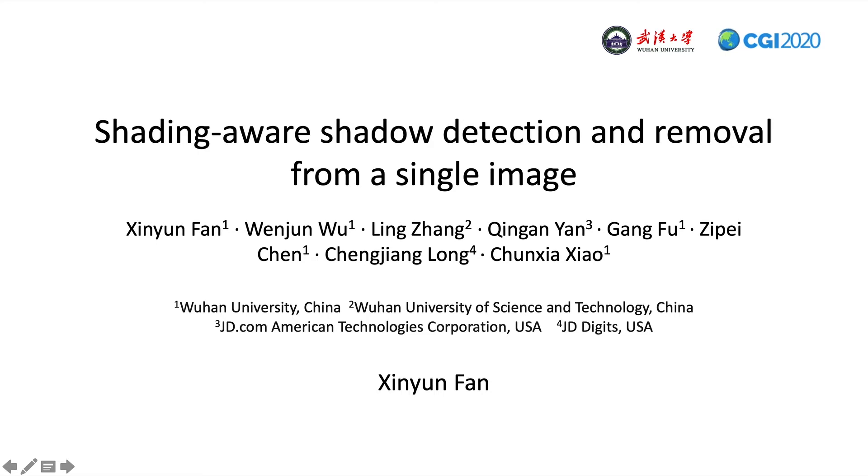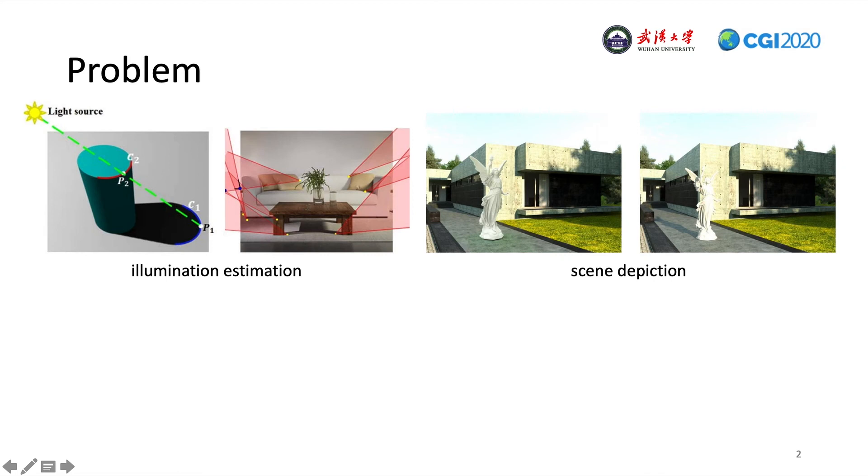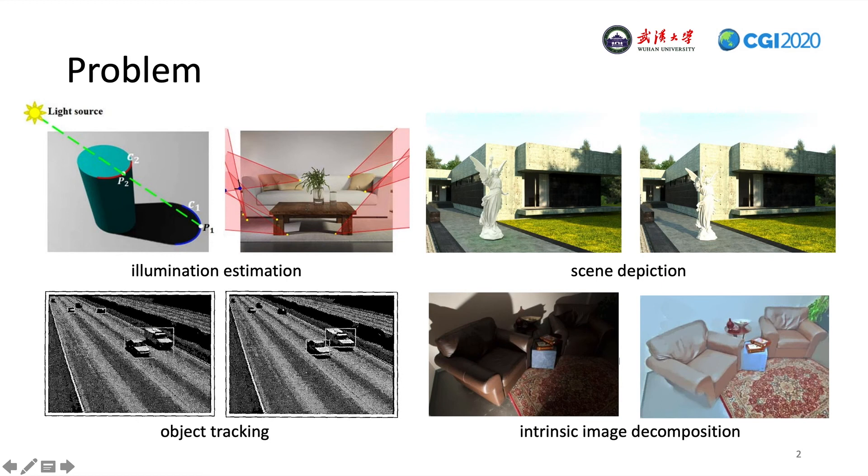Shadow is a natural phenomenon in our daily life. Although shadows can provide useful clues for illumination estimation and scene depiction, shadows also degrade the performance of some applications such as object tracking and intrinsic image decomposition. Therefore, it is a fundamental problem to detect and remove shadows from a single image and will definitely be beneficial for computer vision and graphic communities.